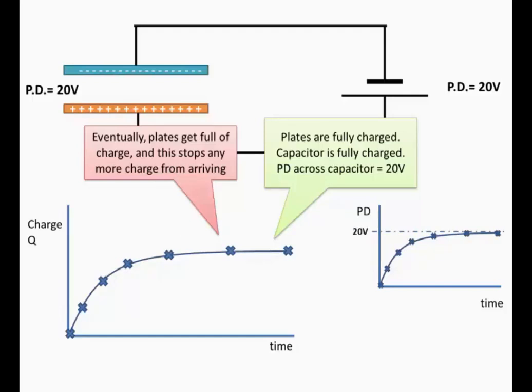Now how does the current change? At the start, the charge is flowing freely so we begin with a large current, and it gets smaller with time. This is the typical curve of the charging plates.